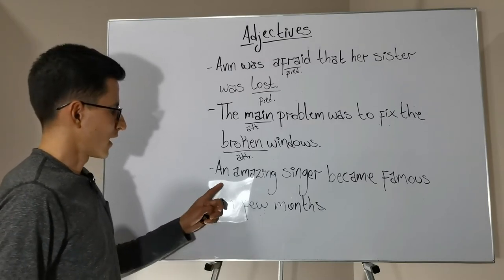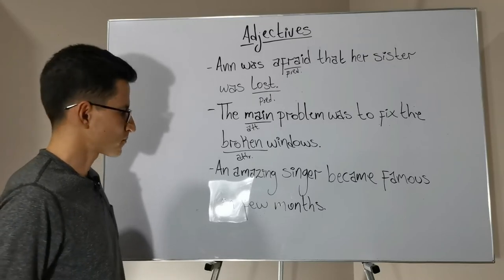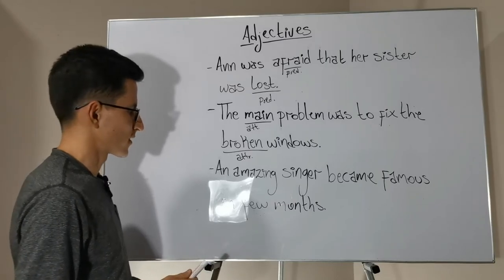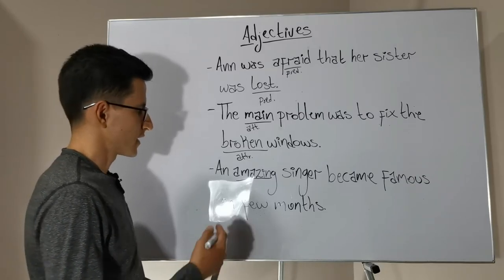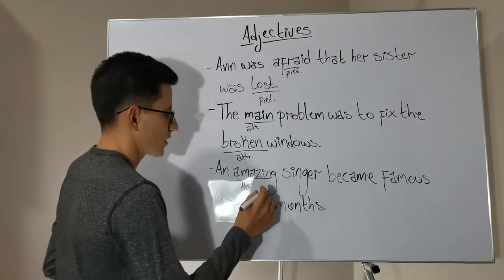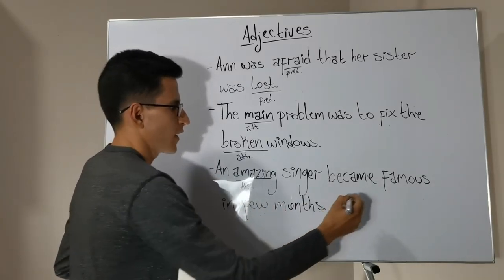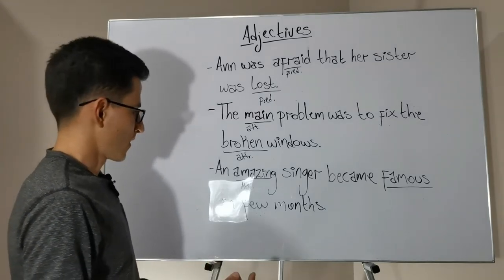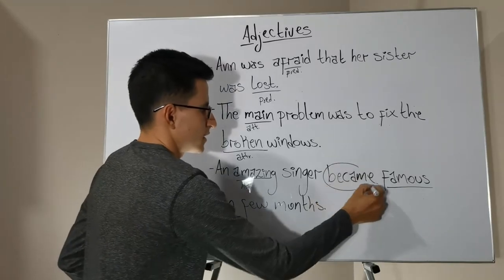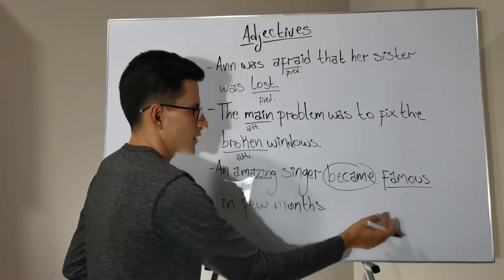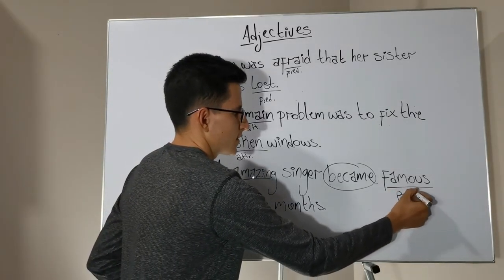Let's see the last one: An amazing singer became famous in a few months. Let's try to find the adjectives first. An amazing singer — here we have the first one, which is amazing. We know that it is an attributive adjective because it is preceding the noun that it is modifying. Now, became famous in a few months — famous, we know that is an adjective. If we pay attention, we can see that became is a linking verb. So this adjective is still modifying the first noun, which is singer. So we can say that famous is a predicative adjective.